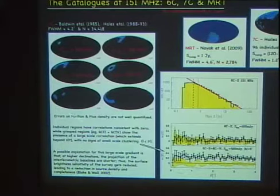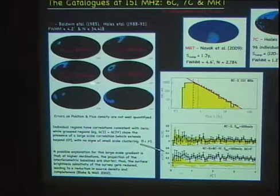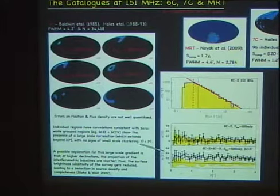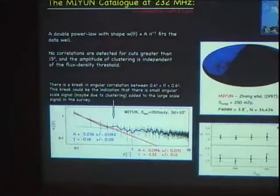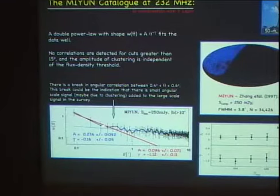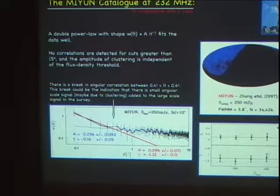The second step: we looked at stuff around 151 megahertz, and for this case we basically got no correlation whatsoever. There are many problems with those catalogs — errors in position and flux density, and sensitivity changes with declination. We had to analyze them one by one. And then finally, the only other catalog where we detected something was a Chinese catalog. For that case, we get a double power law — one part probably describes the clustering, and the other part probably describes sensitivity changes with declination in the catalog.